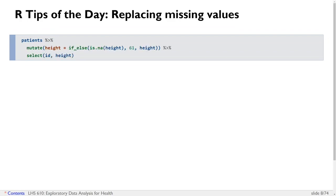So if we wanted to replace the missing values of height with 61, here's how to do it. Start with patients, then mutate and say height equals ifelse. The first argument of ifelse is the condition. is.na is a function in R that tells us for each value whether that value is missing or not. So if is.na returns true, the value is missing; if it returns false, the value is not missing. If the value was missing for height, we assign it a 61. If the value was not missing, we keep whatever value was there.